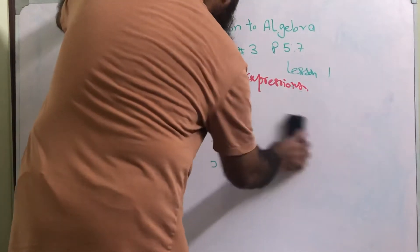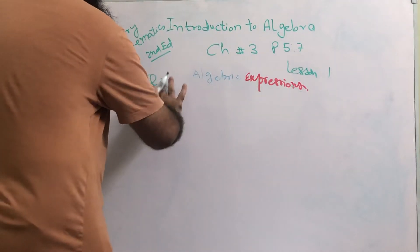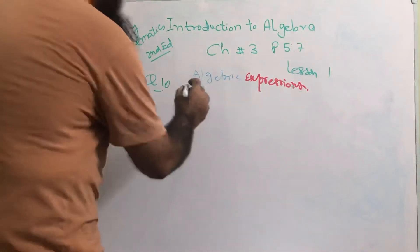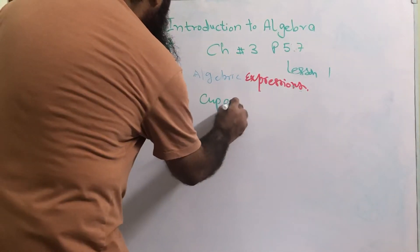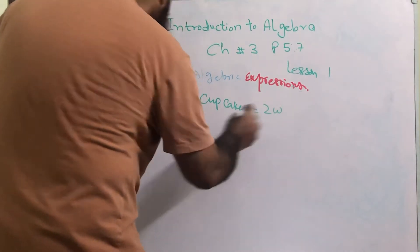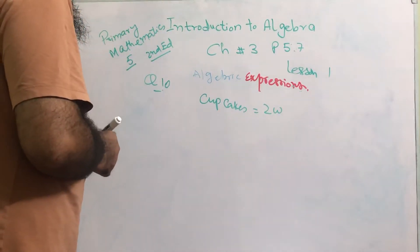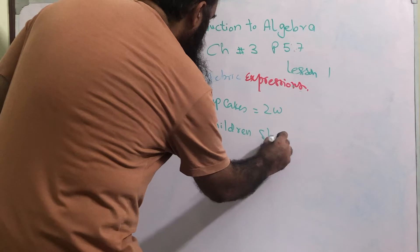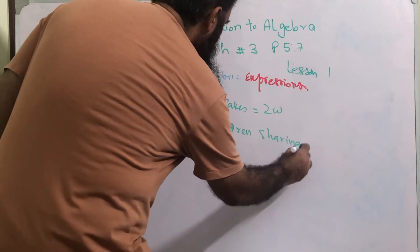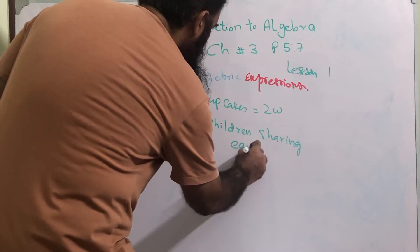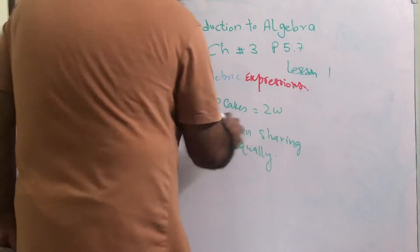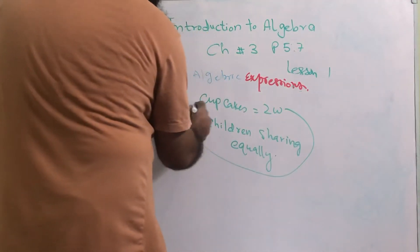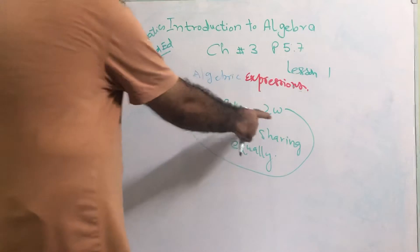Question number 10 says: there are 2w cupcakes in a box. Seven children share the cupcakes equally. Sharing equally means it is divided equally — 2w cupcakes will be shared among seven children.